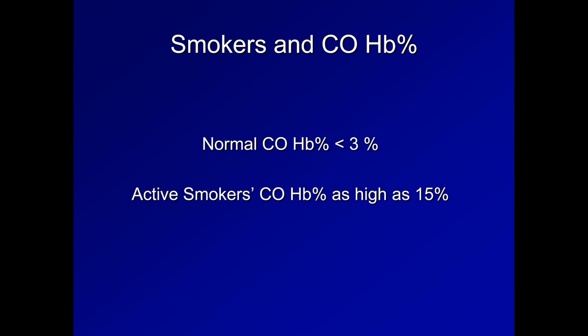Interestingly, while normal carboxyhemoglobin levels are under 3%, active smokers can have levels as high as 15%. The fact that they do not generally become symptomatic from their recreational smoke inhalation is a consequence of the development of compensatory mechanisms, including production of 2,3-DPG and an increase in their hemoglobin production.